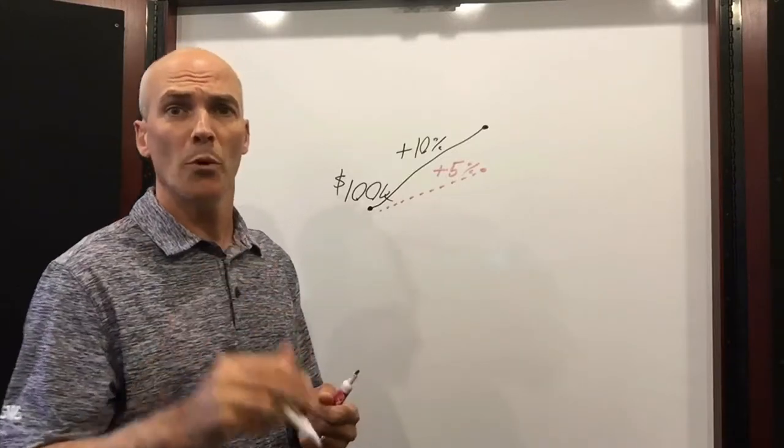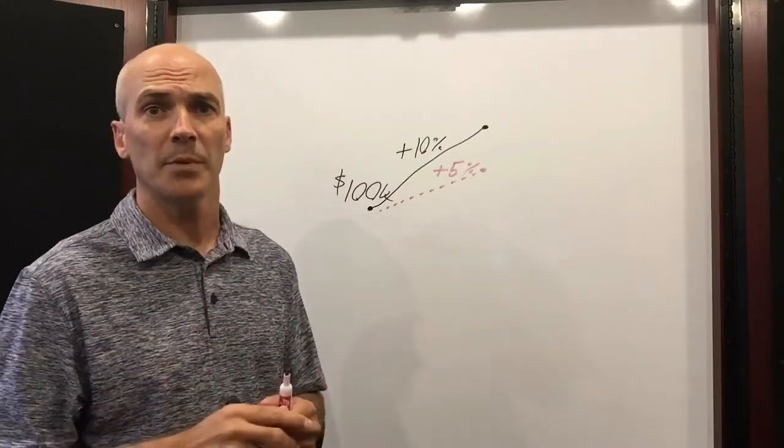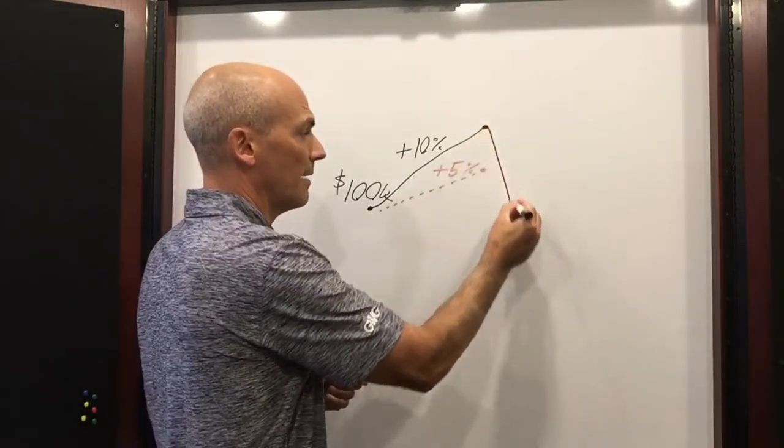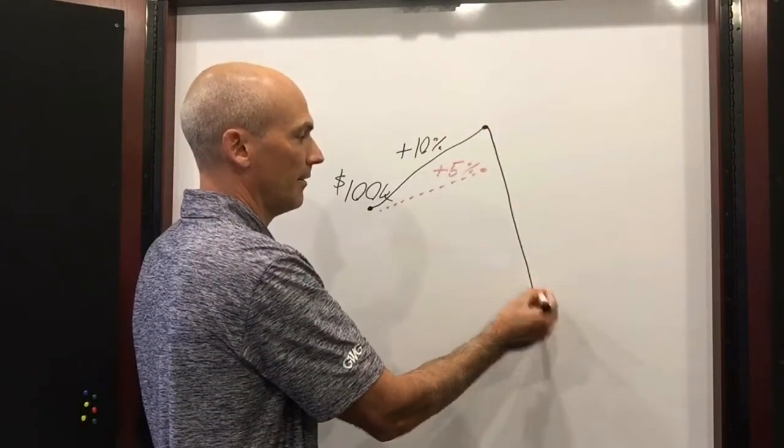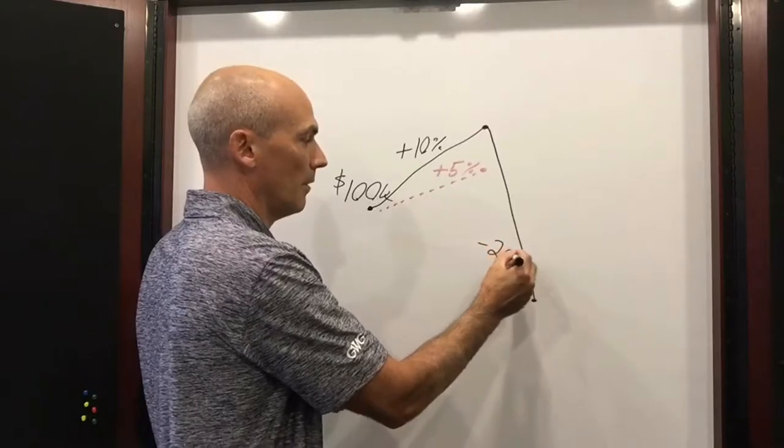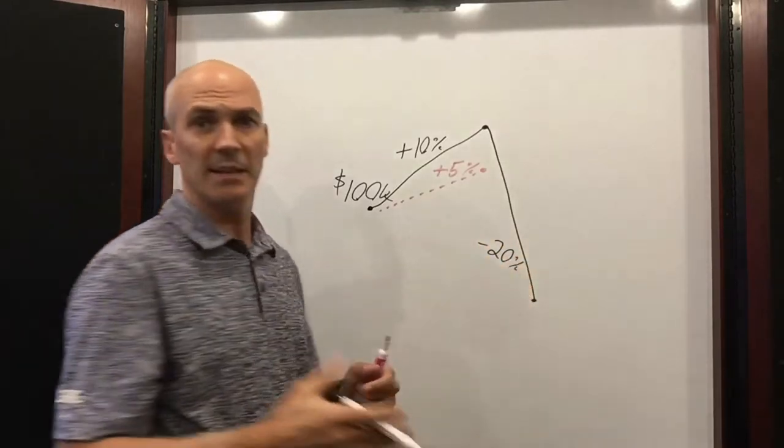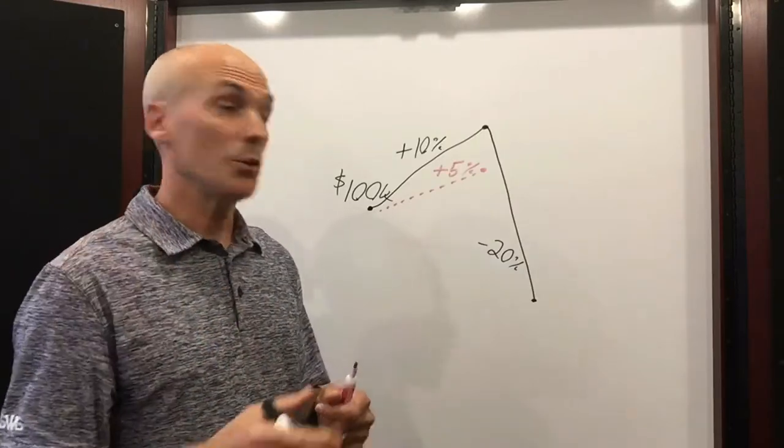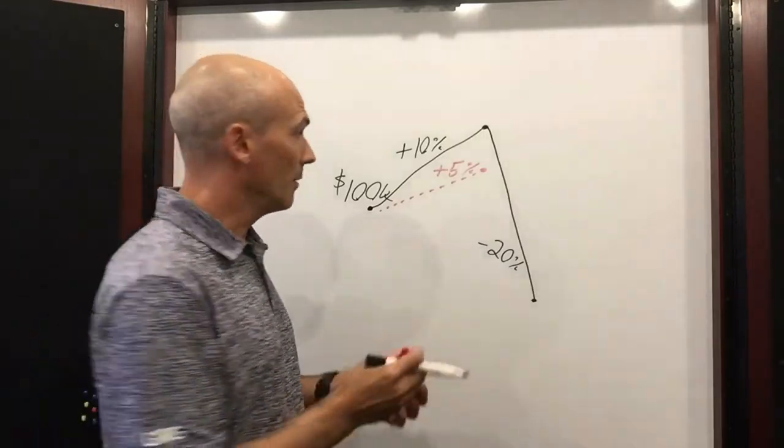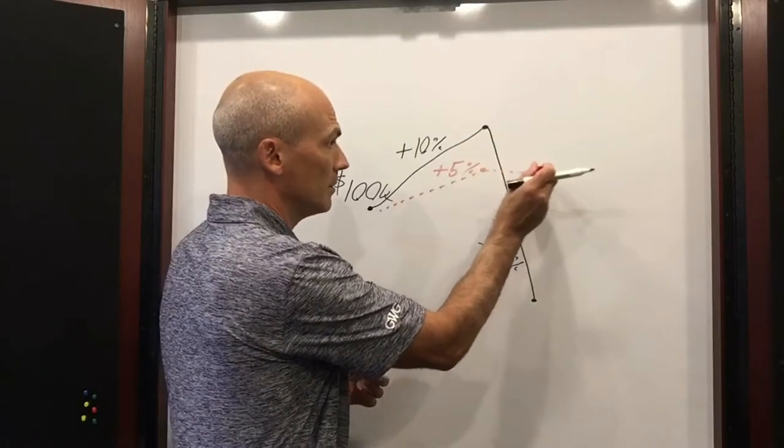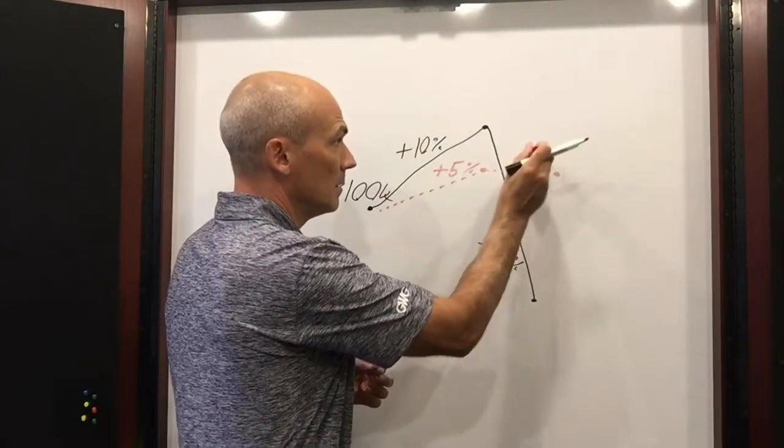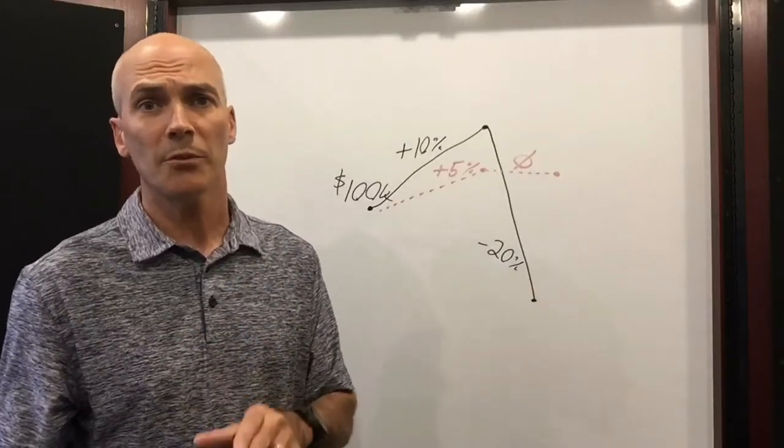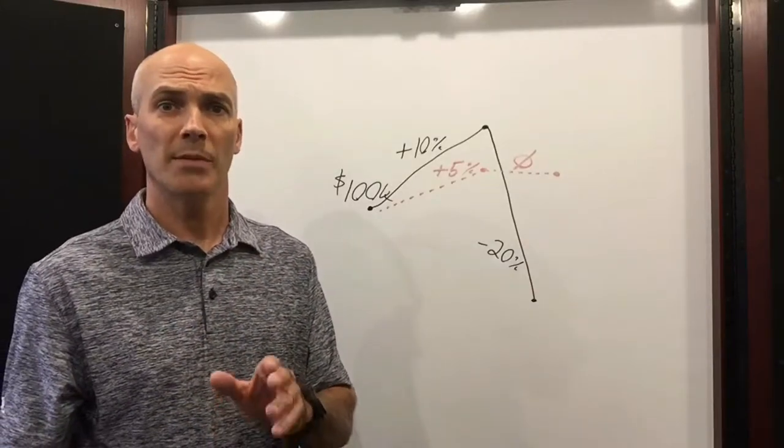Now let's carry this forward two more years so you get the full concept of indexing. Year two, we're going to assume that the S&P 500 falls. Let's just say the S&P 500 falls 20% in this hypothetical example. In an index product, you're not going to lose money in that year. You don't lose anything but you don't make anything either. But more importantly, you keep the interest that you earned the previous year.